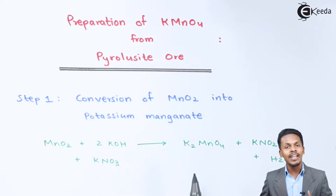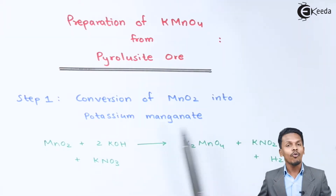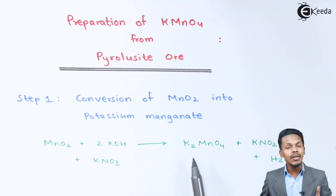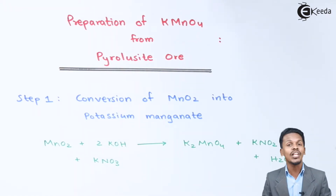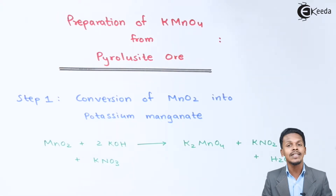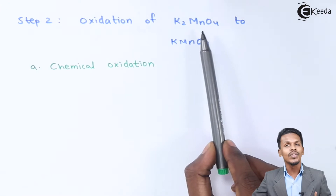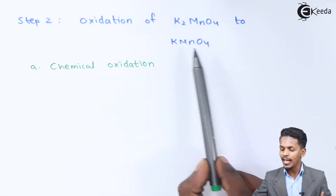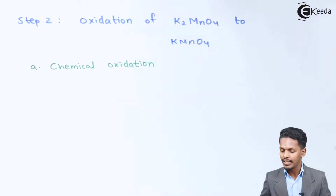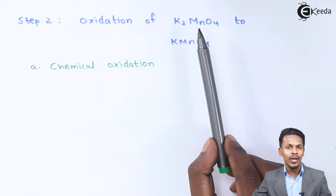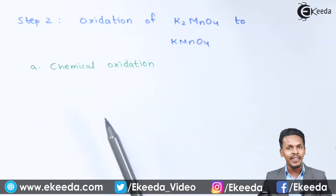Now this potassium manganate (K2MnO4) has been obtained, but this is not the final product we need. We have to convert K2MnO4 (potassium manganate) to potassium permanganate (KMnO4). For that, let us understand step number two: the oxidation of K2MnO4 (potassium manganate) to KMnO4 (potassium permanganate). There are two different methods to achieve this.